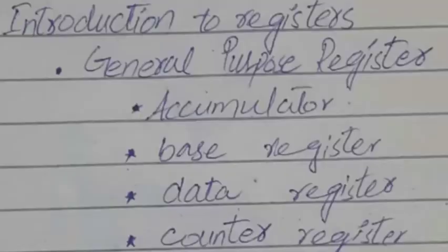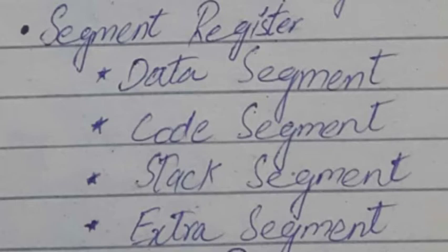There are some types of registers. First, we have General Purpose Registers which include Accumulator, Base Register, Data Register, and Counter Register. Second is Segment Register which includes Data Segment, Code Segment, Stack Segment, and Extra Segment.